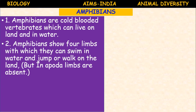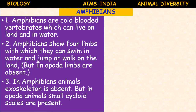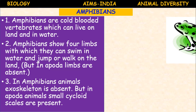Amphibians show four limbs which they can use to swim in water and jump or hop on land. However, in the order Apoda, limbs are absent. Regarding exoskeleton: in amphibian animals, the exoskeleton is absent, but in Apoda, small cycloid scales are present.